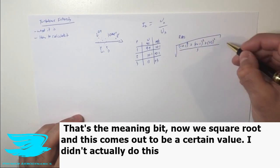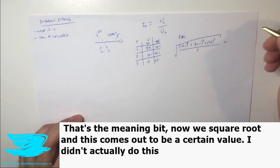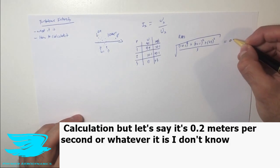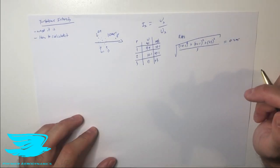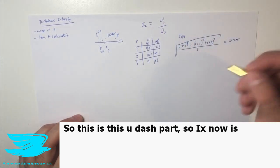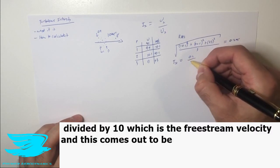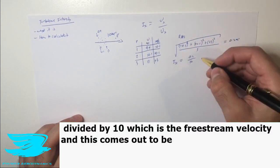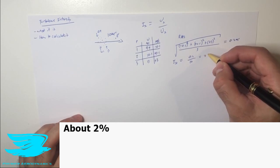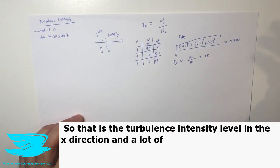Now we're going to mean them. So we have to divide it by the number of values that we measured. We measured three. That's the meaning bit. Now we square root and this comes out to be a certain value. I didn't actually do this calculation, but let's say it's 0.2 meters per second or whatever it is. So this is this u dash part.